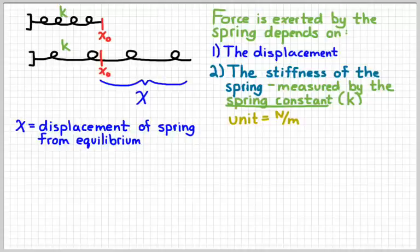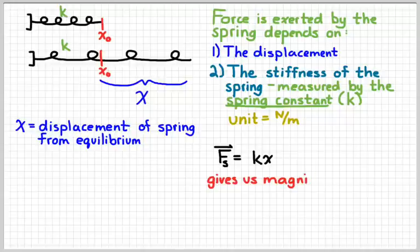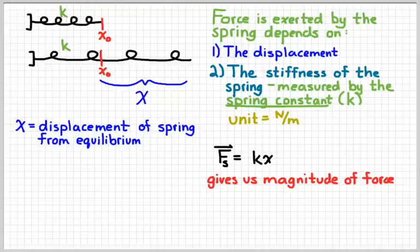And so the bigger the spring constant, the stiffer the spring is. And so we can write a simple equation. The force exerted by a spring is equal to the spring constant times its displacement. Now we have to realize that, just like a lot of these equations for forces, that equation only gives us the magnitude of the force.